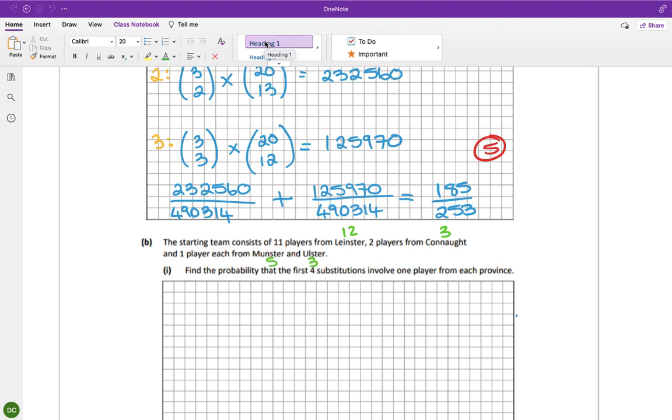Find a probability that the first four substitutes involve one player from each province. Okay, so there's one Leinster sub on the bench and we want him. There's one Connacht sub on the bench and we want him. There's four Munster subs left and we want one. And there's only one Ulster player on the pitch, which means there's two on the bench and we want one.